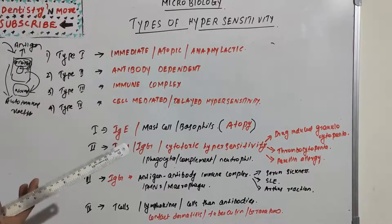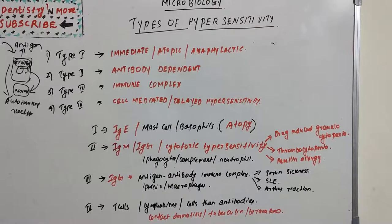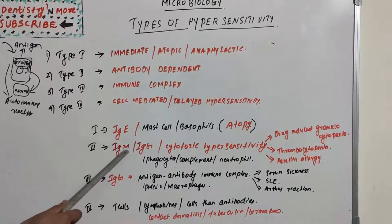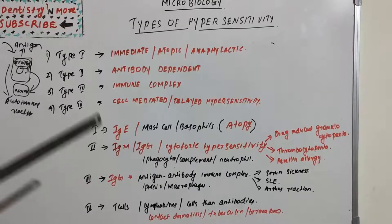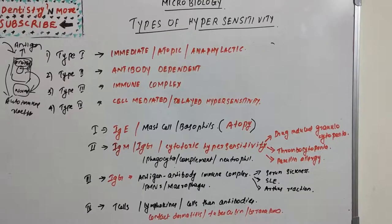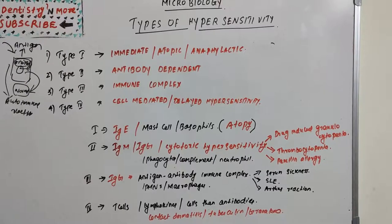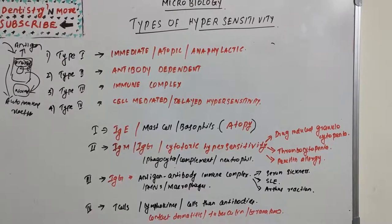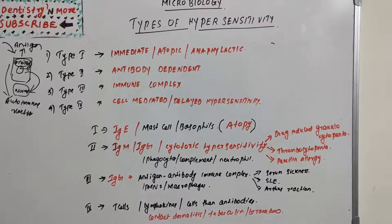Type 3 takes 3 to 10 hours after exposure to the antigen and is mediated by soluble immune complexes, mostly of the IgG class, although IgM may also be involved. The antigen may be exogenous — such as bacterial, viral, or parasitic infections — or it could be endogenous.